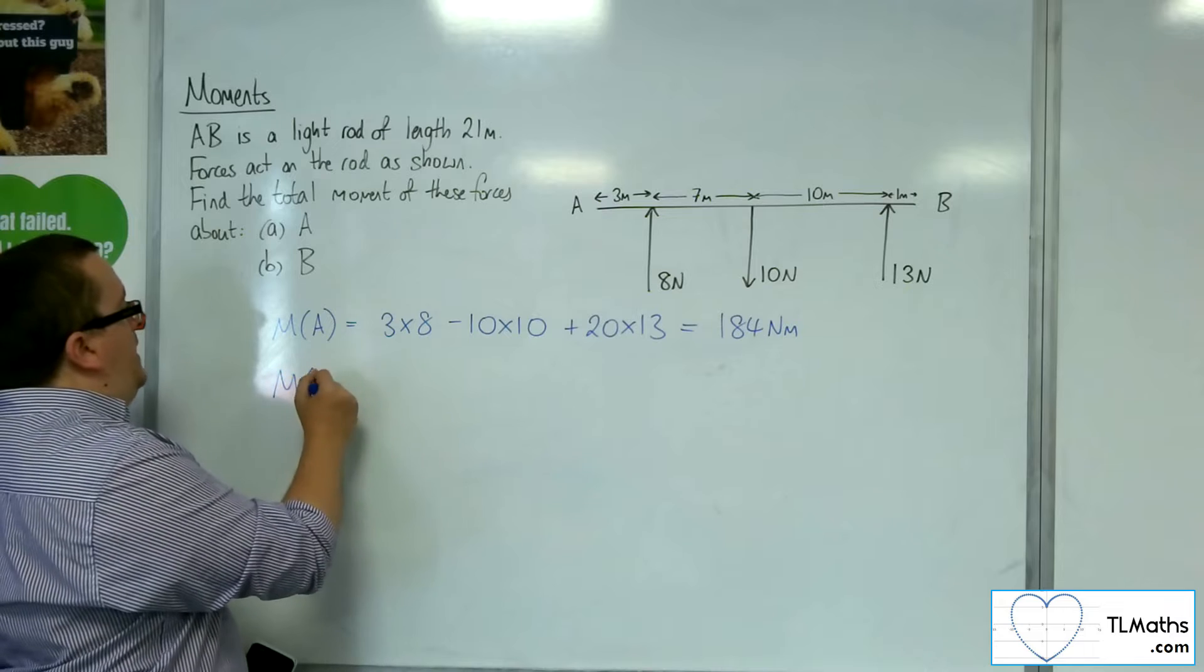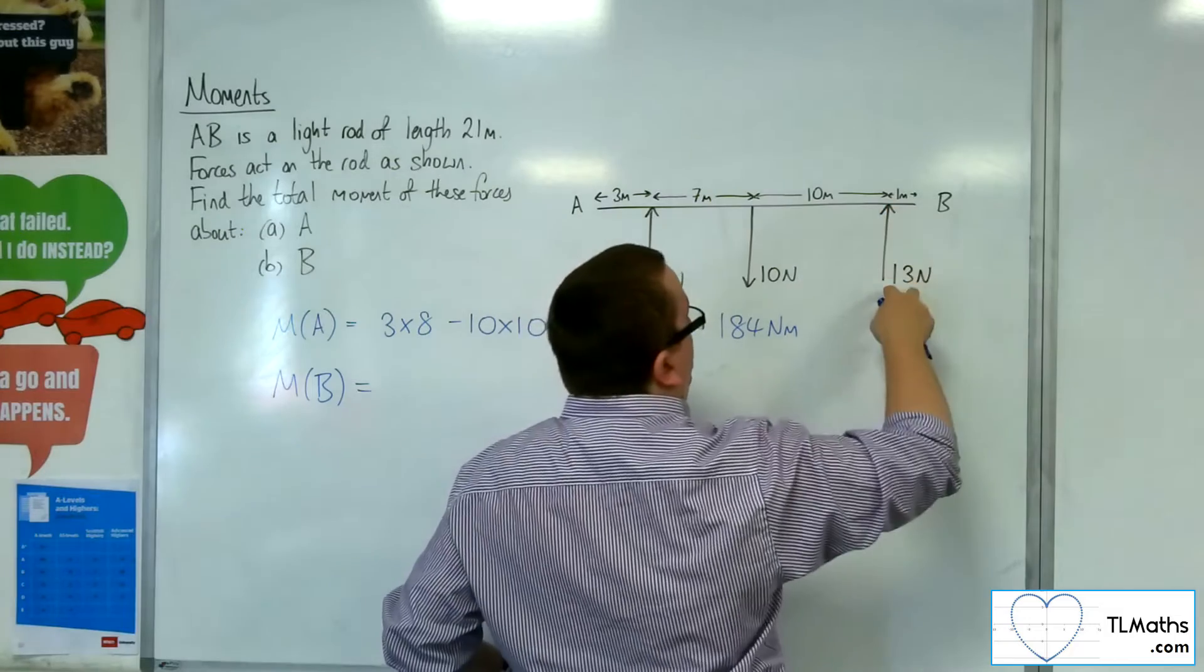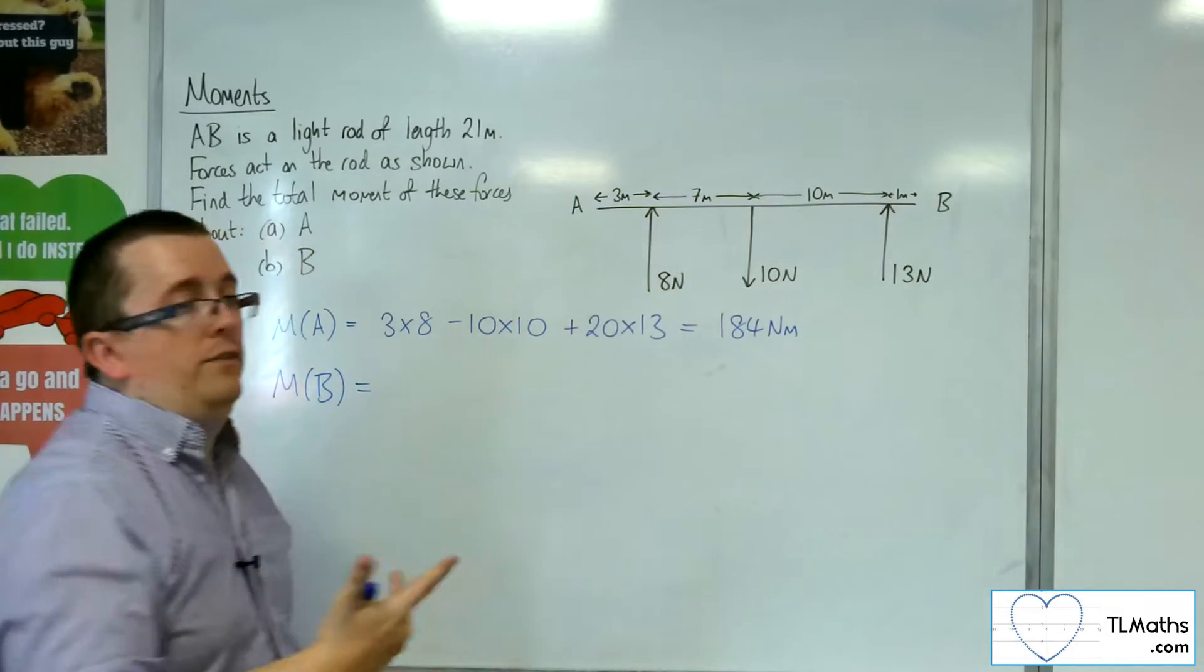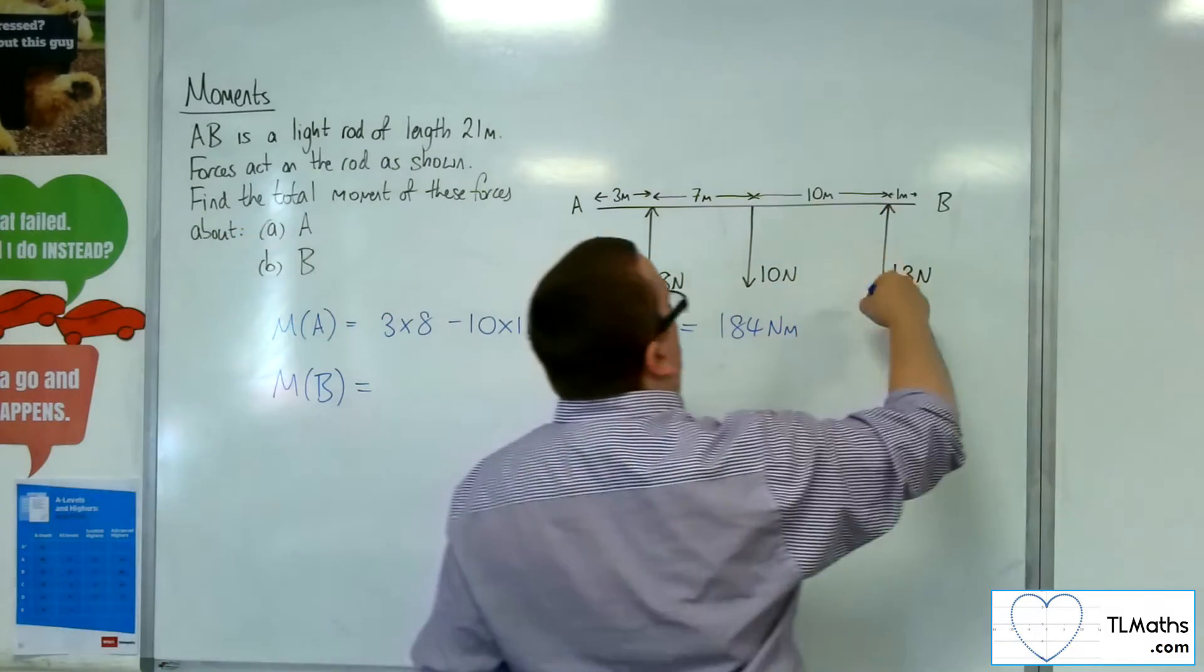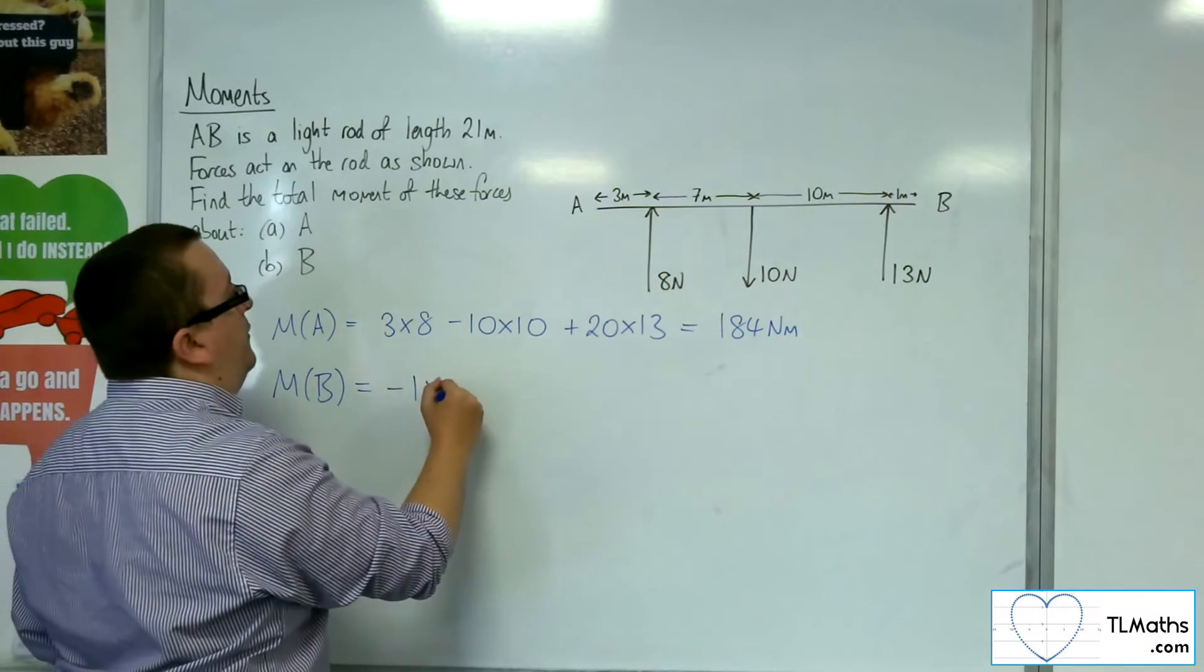Now, as for B, the moment about B, first of all, we've got this force, which is 1 meter away of 13 newtons, and that's pushing around in a clockwise direction, so it would be negative. So we've got negative 1 times 13.